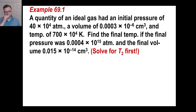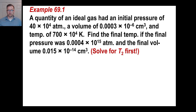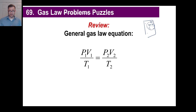Let's look at something a little bit different. This is an unusual way of solving this. A quantity of an ideal gas had an initial pressure of that, a volume of, and a temperature of. Find the final temperature if the final pressure was this and the final volume was this. Now, if you're asking to find the final temperature, in other words, we're trying to find T sub 2, that thing way down there at the bottom.